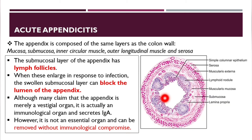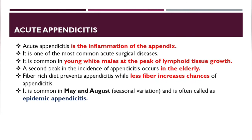Although many people claim the appendix is just a vestigial organ, it is actually an immunological organ that secretes immunoglobulin IgA. However, it is not essential and can be removed without immunological compromise. Acute appendicitis is the inflammation of the appendix and is one of the most common acute surgical diseases.